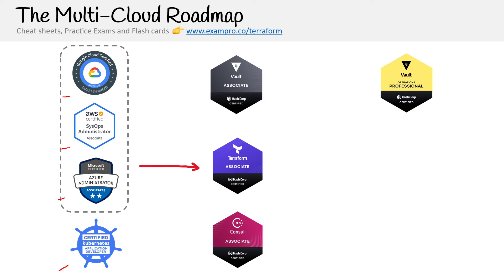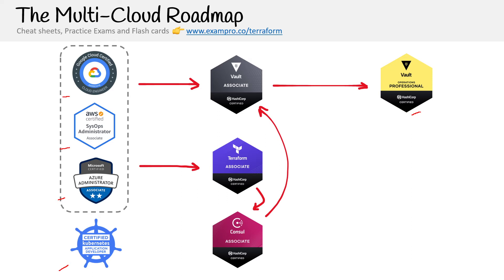HashiCorp, while I'm making this video, does not have many certifications beyond the associate track — they only have a single professional, and it's for Vault. Would they make a Terraform professional? I don't know. But if you wanted to know where to go after your associate, I would probably go over to Consul, which covers cloud or multi-cloud networking that is agnostic, and then maybe over to Vault. You could take one of those associates and move to Vault, then take the professional. If you're on the Kubernetes track, you'd probably want to go over to Consul there.